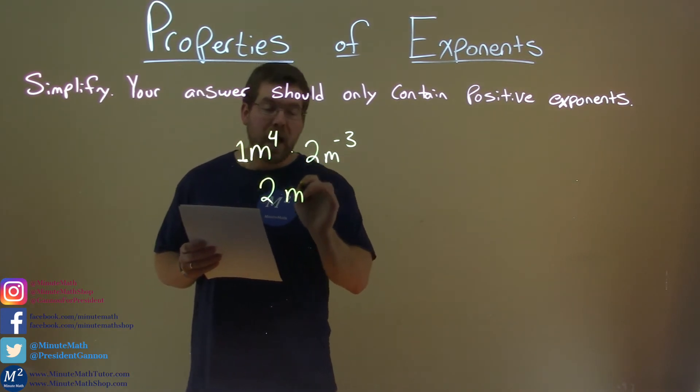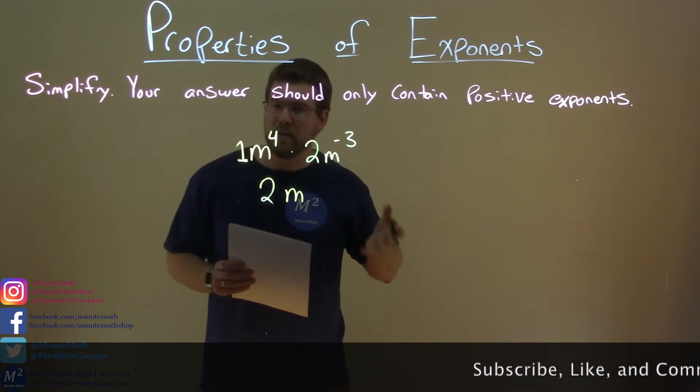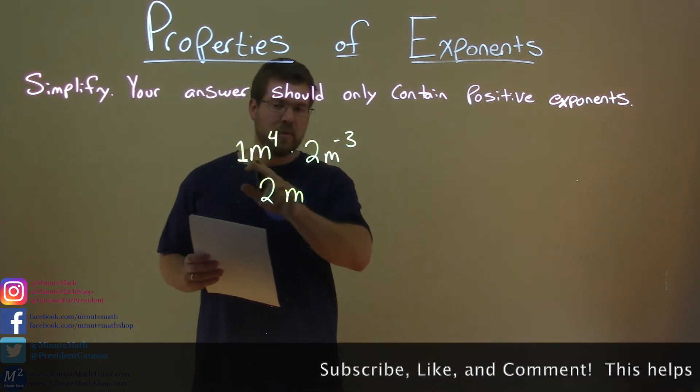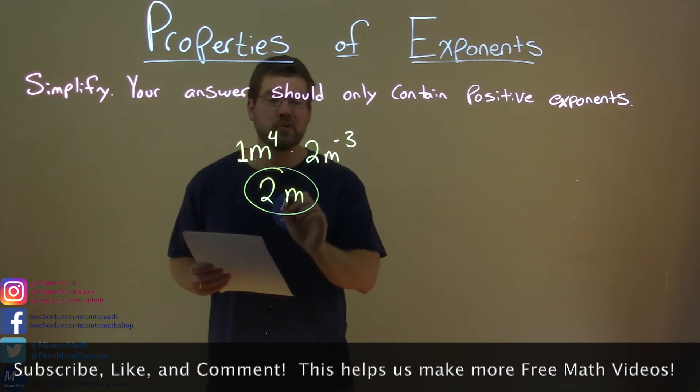We have m to the positive 1 power right there, but we don't really need to write the 1 power, right? Just like we didn't write the 1 as a coefficient. So my final answer here is just 2m.